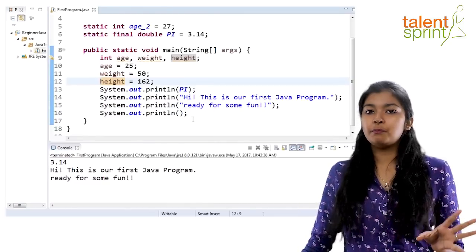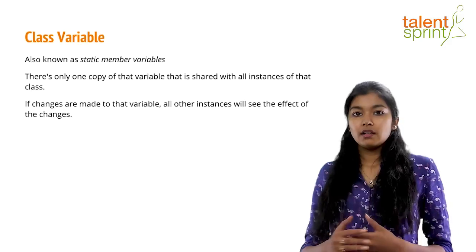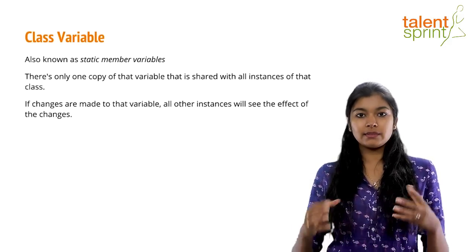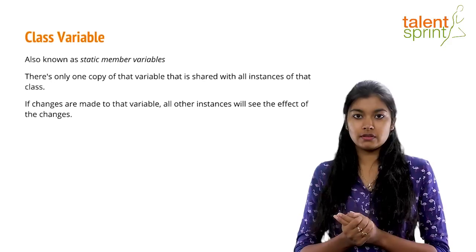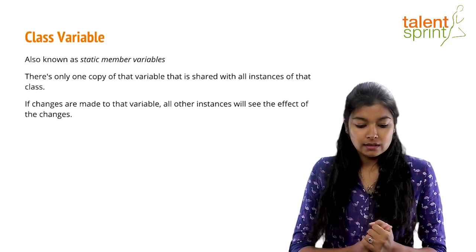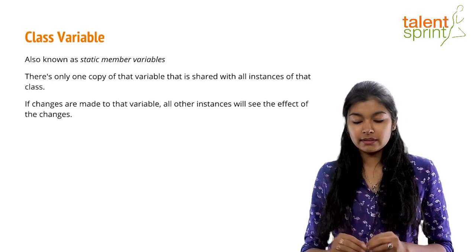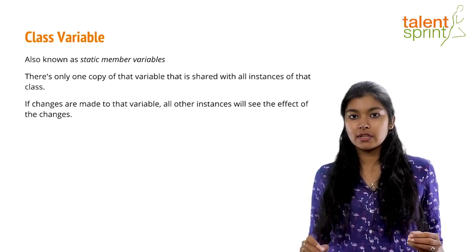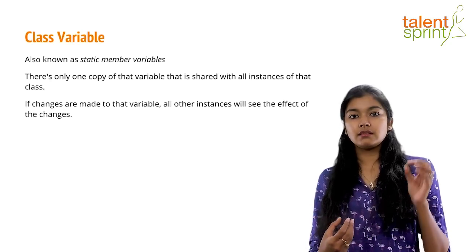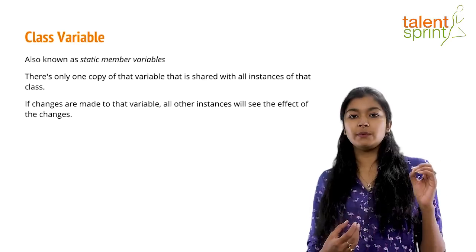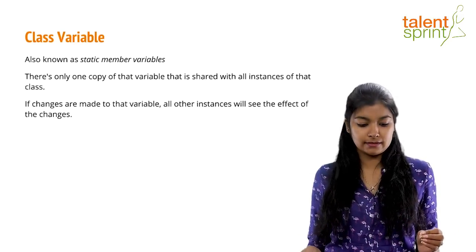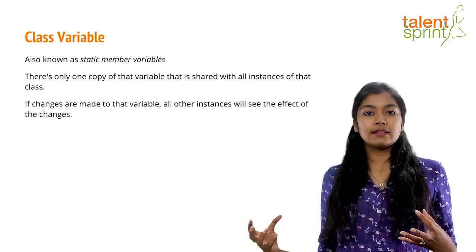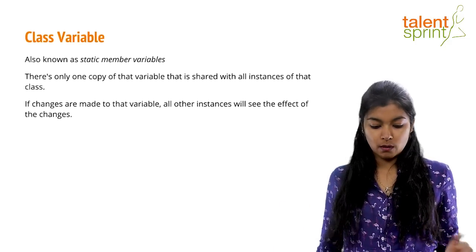Class variables, also known as static member variables, are the variables declared above our functions — they are not part of any function. There is only one copy of that variable that is shared with all instances of that class. Every time you create an instance of the class, one copy is shared among all instances, and if changes are made to that variable, all other instances will see the affected changes.